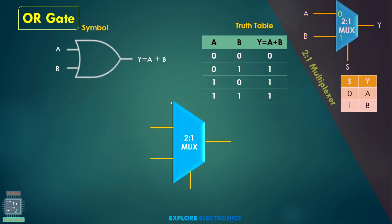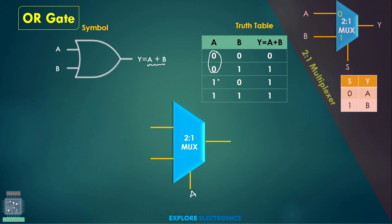Next we have the OR gate. The OR gate gives the functionality of A plus B — meaning if one of the inputs is true, the output will be true. This can be implemented using a 2-to-1 multiplexer by selecting any of the two inputs as a select line. Let me take A as the select line. When A is equal to 0, the first input will be selected. The output Y equal to A plus B will be the same as B when A is equal to 0.